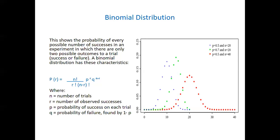The probability of success on each trial is p. If I examine a particular person in the community, what is the probability that that person will be hypertensive for each trial - what is the probability? That is p: probability of success on each trial.